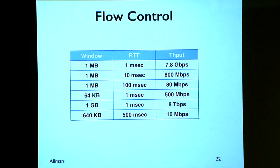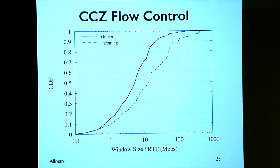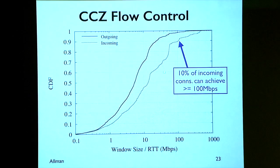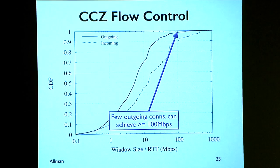Looking at flow control using data from the Case Connection Zone — split into incoming and outgoing — this is the maximum window size in a connection divided by the round trip time, so in theory the maximum throughput we can get. Only 10% of the incoming connections can achieve more than 100 megabits per second. That's 10% of the bandwidth those houses are connected with — fibered up at a gigabit per second. For outgoing connections it's even worse: only very few can achieve even 100 megabits per second.